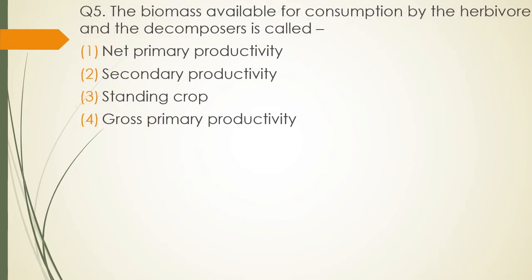Question 5. The biomass available for consumption by the herbivores and decomposers is known as — net primary productivity, secondary productivity, standing crop, or gross primary productivity? The correct answer is option 1 — net primary productivity.